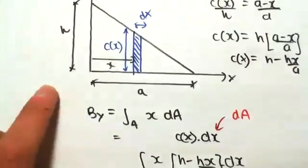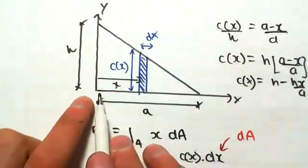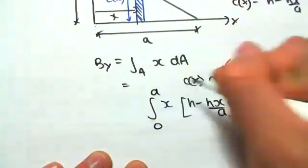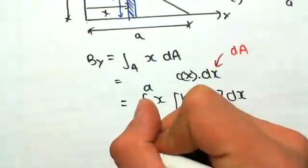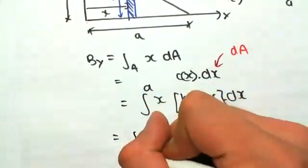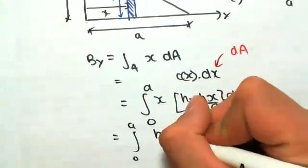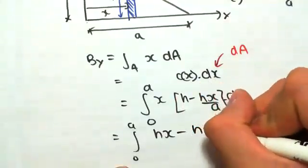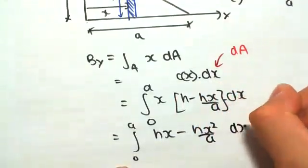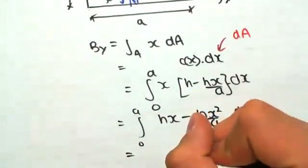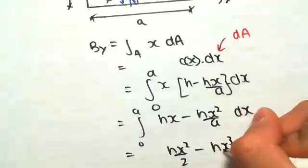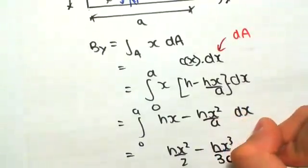Now, because we're going dx, this is the thickness, we're ranging, this is moving up and down from 0 to a. So that's our integral. Solving this, just expanding it out, we'd have hx minus hx squared on a, dx, which would equal, integrating this for x, we would have hx squared on 2, minus hx cubed on 3a,